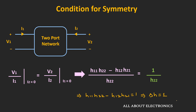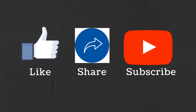This is all about the H parameters. We will discuss more about them during the small signal analysis of the BJT. I hope in this video you understood how to find the H parameters for the two-port network. If you have any questions or suggestions, let me know in the comment section below. If you liked this video, hit the like button and subscribe for more such videos.